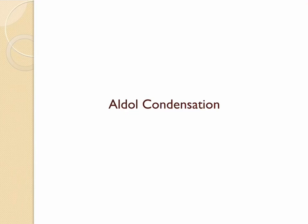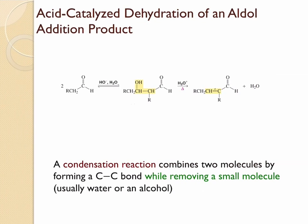Aldol condensation: the product obtained in the aldol addition reaction, when it undergoes dehydration, gives an alpha-beta unsaturated carbonyl compound. This overall reaction is called an aldol condensation reaction. Here we have two molecules of the aldehyde reacting together to form the aldol addition product, which is the beta-hydroxy aldehyde. You can see that the hydroxy group and the carbonyl group are in the beta position with respect to each other.